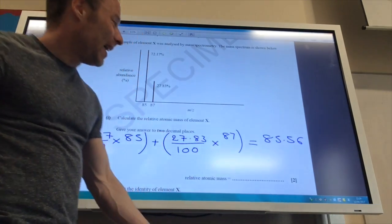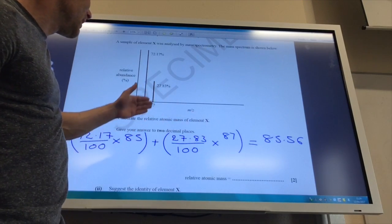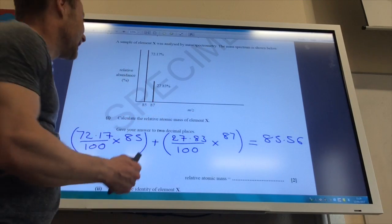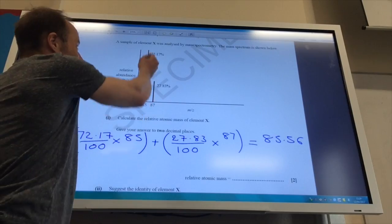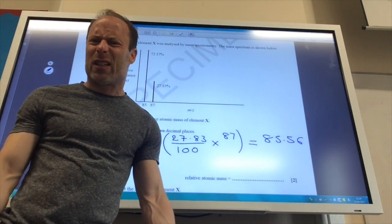Look at the value. Does it make sense? 85. It's got to be between these two, 85.56. That does make sense. It's got to be near the 85 mark because that's your higher abundance. So it's looking right. So check your value. Make sure it makes sense.